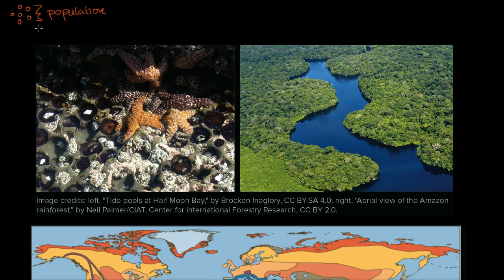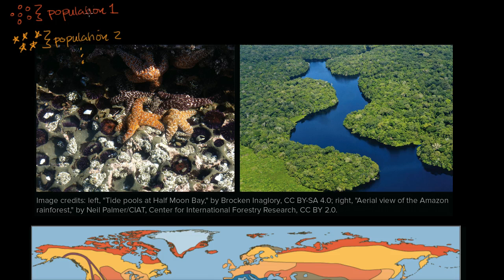A certain area doesn't tend to have just one species in it, so we could call this population one. You might have other populations there of a different species — so this is another species right over here, all of them combined in the same area, we could call this population two. We could obviously have many more populations there, and if you take all of the populations in a given area — and there's flexibility on how you define that area — you take those together, taking all of the living things in a certain area, we call that a community.